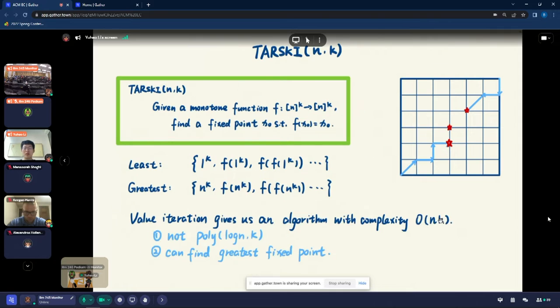We are considering the complexity of finding a Tarski fixed point over this grid. Naturally, the value iteration or path-following algorithm gives us an algorithm with complexity n to the k. Sorry, with complexity order n times k. A quick comment is that this is not a truly polynomial algorithm because the polynomial factor should be log n and k. For example, if we start from the greatest point and follow the path, then we can actually find the greatest fixed point. But for a Tarski problem, we only need to find an arbitrary fixed point.